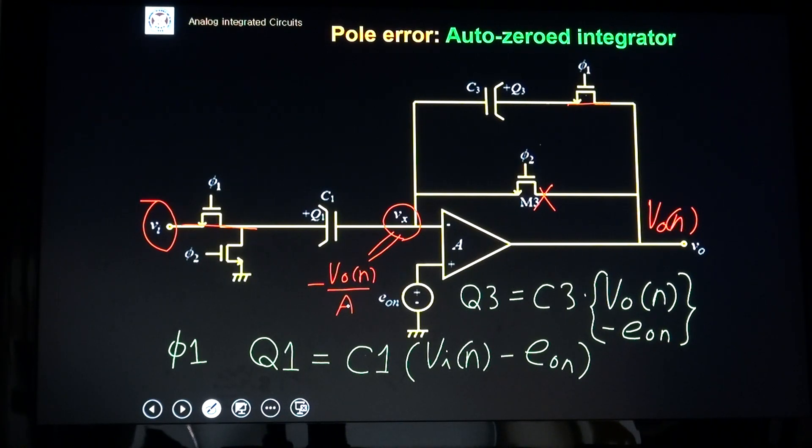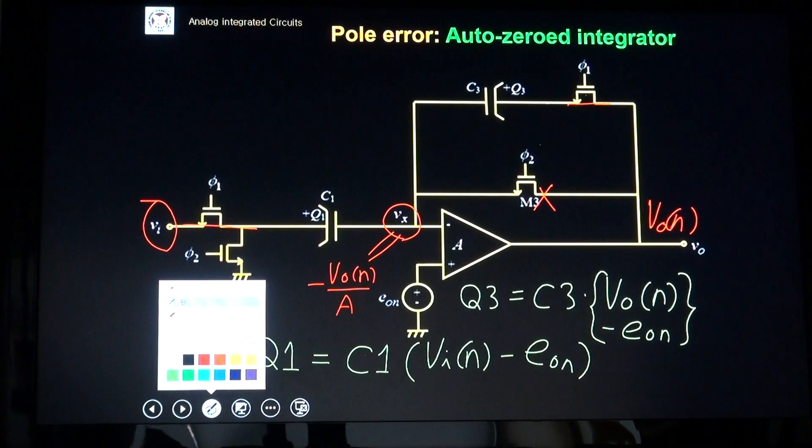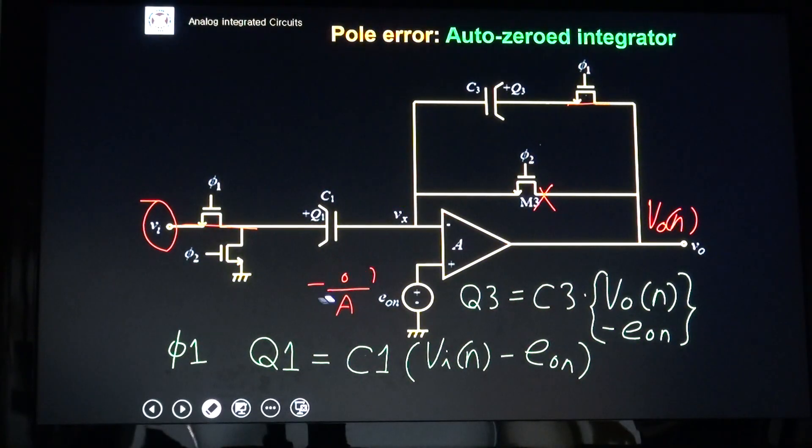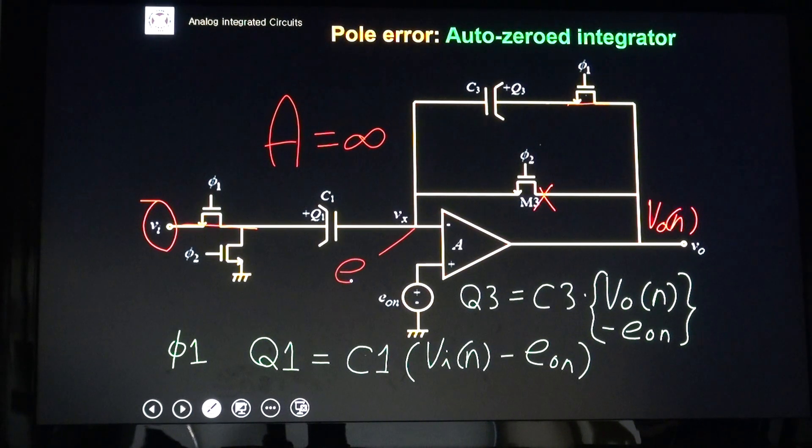This is A equal infinite. So, this EON is zero. I assume A is still A is infinite, A equal infinite. So, it should be zero. This should be EON, because this voltage should be zero. Because of negative feedback through C3 and A equal infinite, there must be virtual ground. So, my Q1 is C1 VIN minus EON. How about the Q3? VON minus EON.